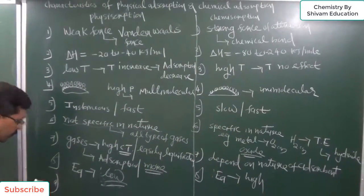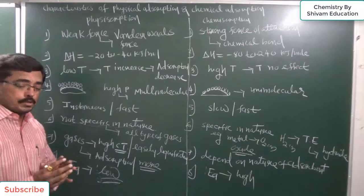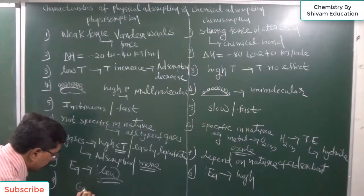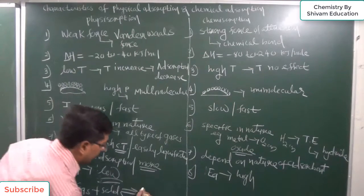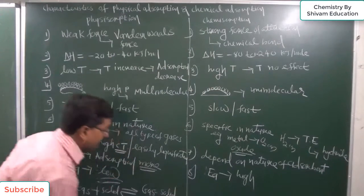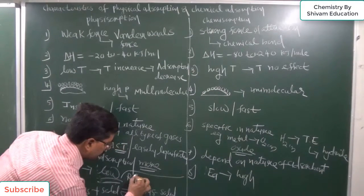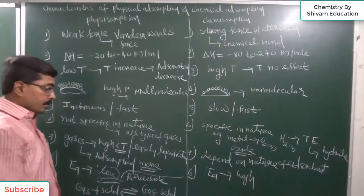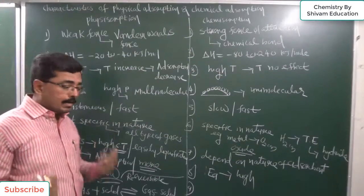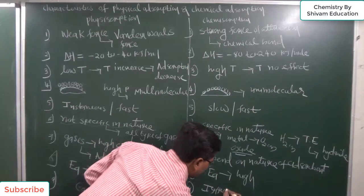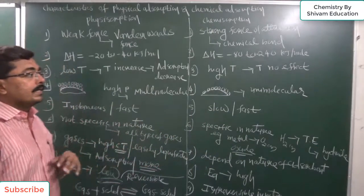Physical adsorption is reversible in nature — gas can adsorb on the solid surface and then leave if temperature is increased or pressure is decreased, so both adsorption and desorption are possible. While in chemical adsorption, strong bond formation occurs, so once gas adsorbs on the solid surface it cannot easily leave — it is irreversible in nature.